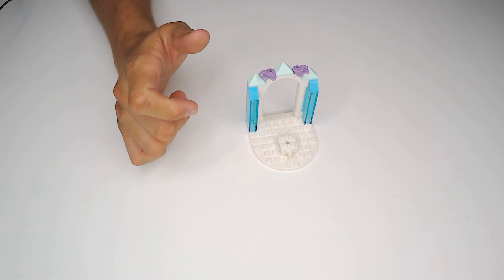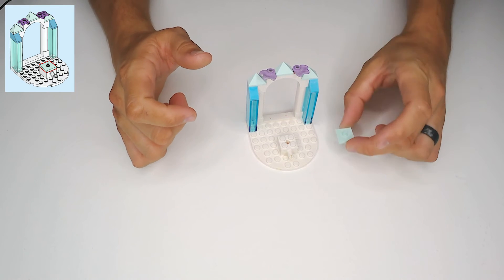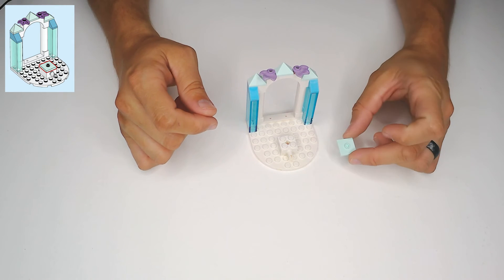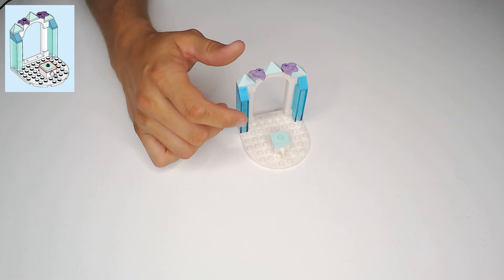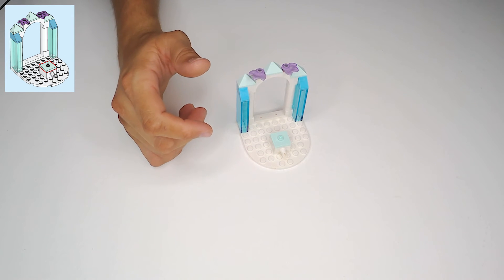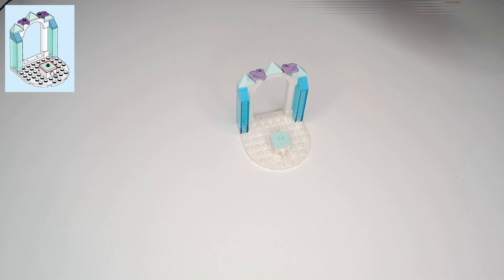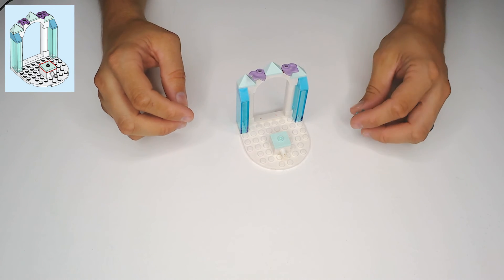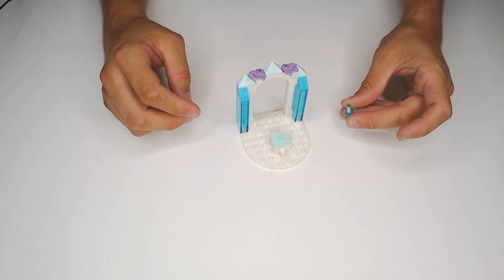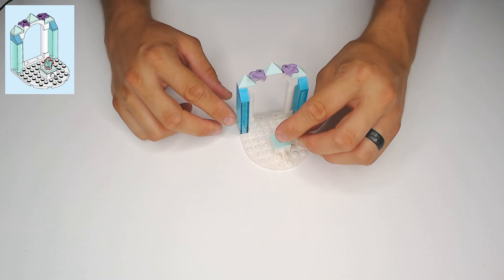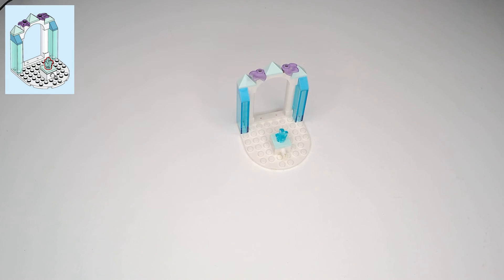Turn the page to 20 and 21. We get this sea foam green two by two tile with offset stud. So we go right on top of that two by two block. And then we also need this clear blue crystal. This crystal piece is always one of my favorite pieces. That's going to be right here in the middle, right on that offset stud.